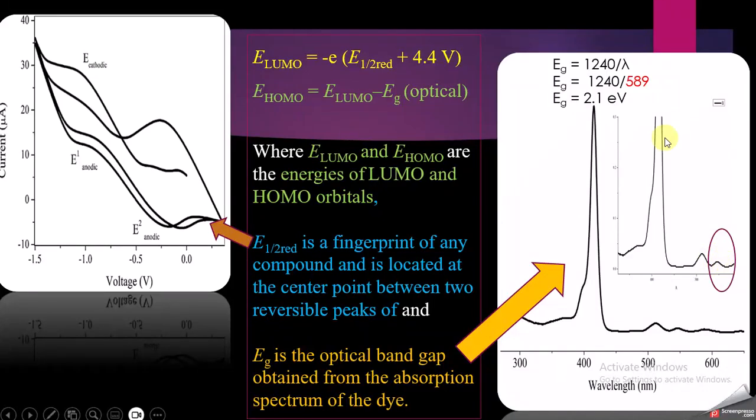This is the wavelength I found here, which is 589 nanometers. If I put this here, I will get the band gap of 2.1 electron volts, which is the optical band gap of my molecule. Once I have this, I will use this formula.